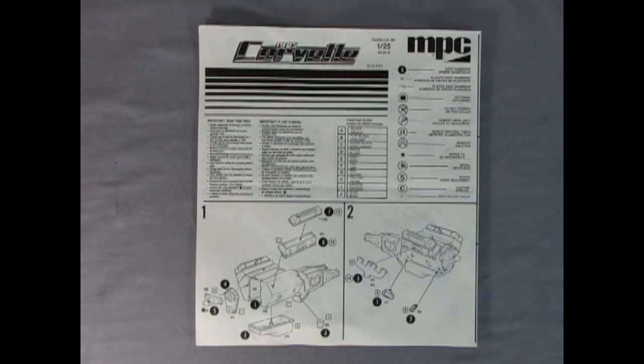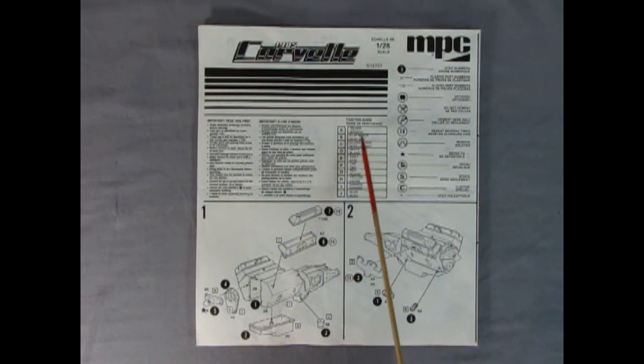Here we've got our instruction sheet for our 1985 Corvette. And as you can see this folds down and you get the engine how to build down here. There's all our symbols for putting the kit together as well as the paint chart.